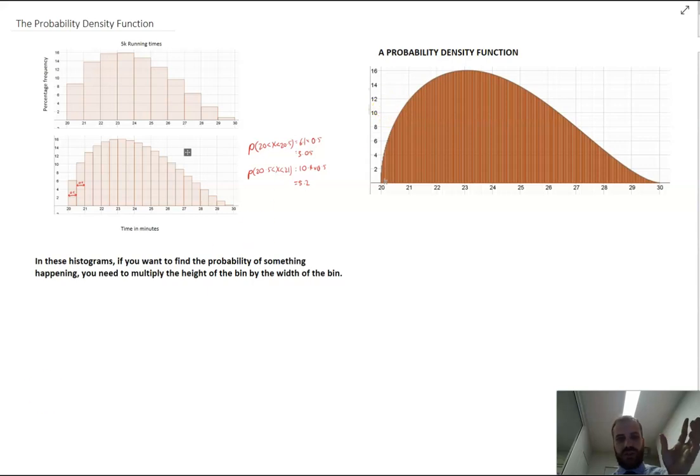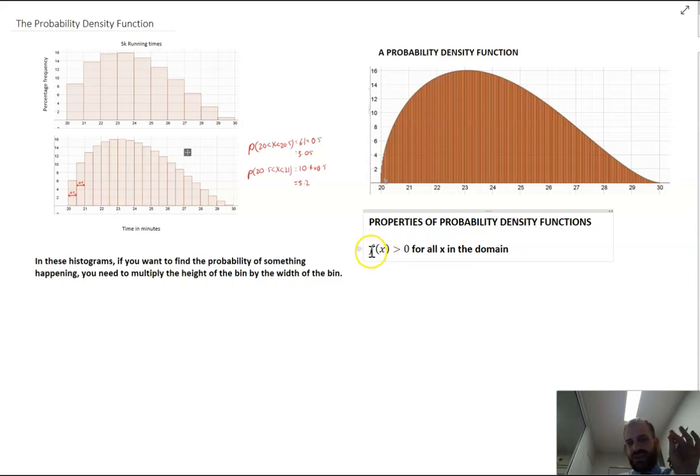So we can approximate the area under this curve and we can come up with a function. It doesn't matter what that function is. It's quite a complicated looking function. But what matters is that it is a function and we can find areas under functions. We already know how to do that. And we're going to get some nice properties going on here. So the first property I want to draw your attention to is this: f(x) is greater than 0 for all x in the domain. What does that mean? It just means that it's above the x-axis throughout the domain of the function. Now this particular function has a domain between 20 and 30.